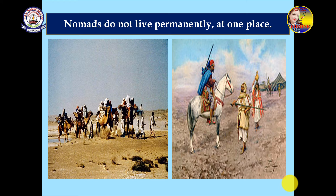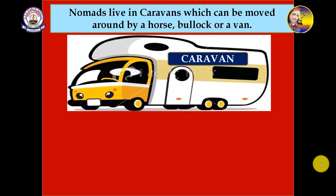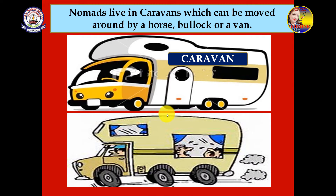Nomads do not live permanently at one place — they keep moving around. When it is very cold in their region, they move to warmer places. Nomads live in caravans which can be moved around by a horse, bullock, or van. You can see such caravans, children. They move from one place to another in search of food and other things for themselves and for their cattle.